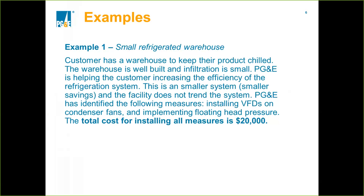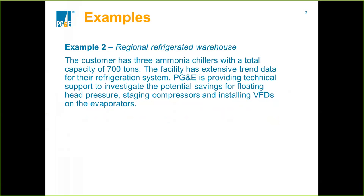The PG&E engineer has found a couple of measures that might save energy: installing VFDs on the condenser fans and implementing floating head pressure. The total cost for the measures is estimated at $20,000. In the second example, the key is how to run a calculation with more detailed inputs. The system is bigger — they have three compressors with a 700-ton capacity in total — and they have a lot of trend data for that refrigeration system. PG&E is investigating potential savings for floating head pressure, staging the compressors, and installing VFDs on the evaporators.